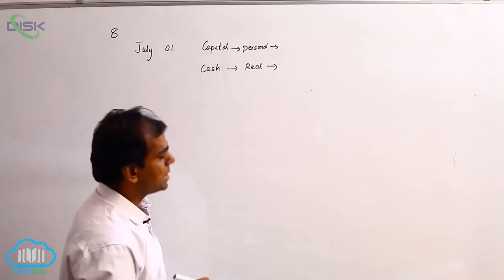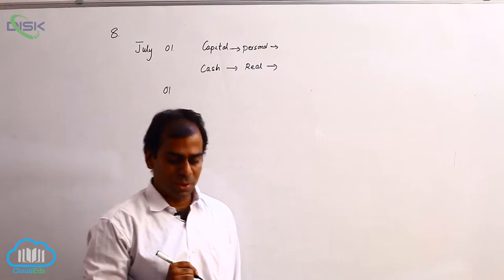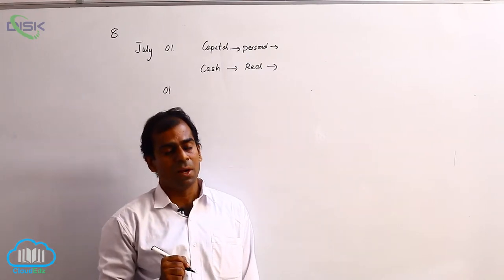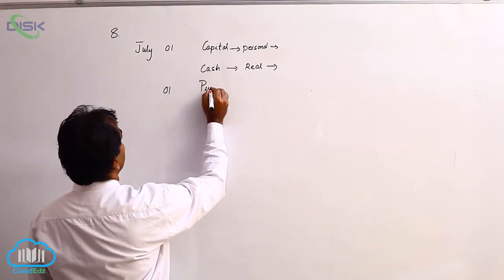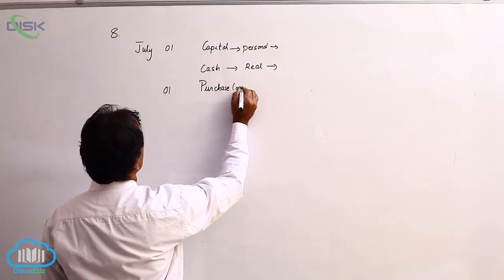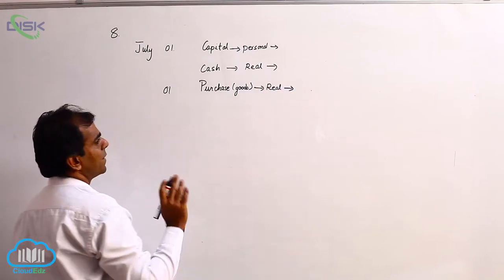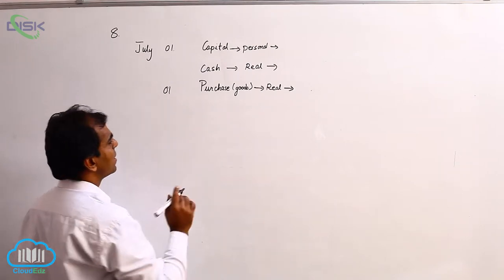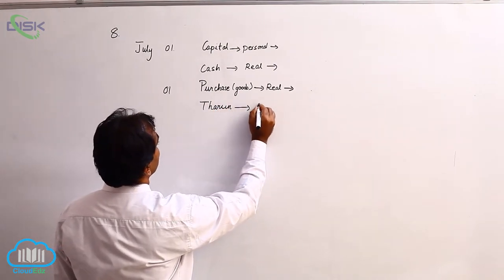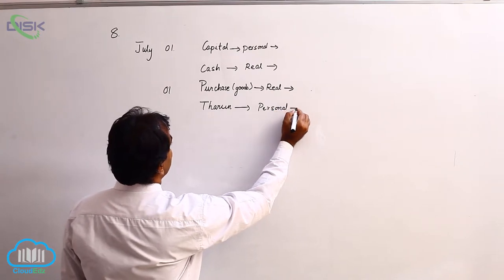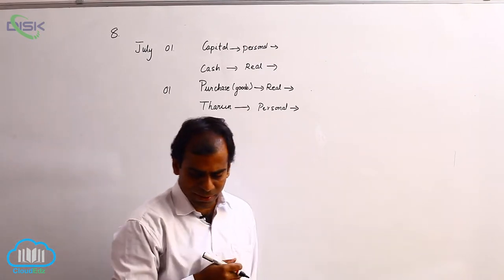The second transaction on the same date: purchased goods on credit from Tarun. Purchase of goods means we will take the account as purchases, which represents goods, so it is a real account. You decide whether the goods are coming in or going out when you purchase and apply the rule. Tarun is a personal account — decide whether Tarun is the giver or receiver of the goods and apply the rule of debit and credit, then write the journal entry.